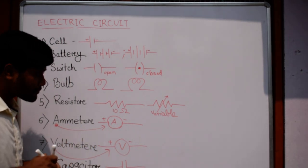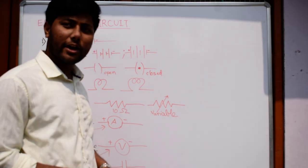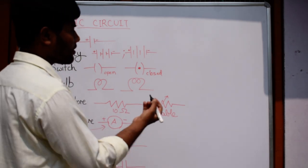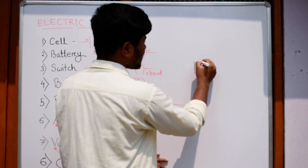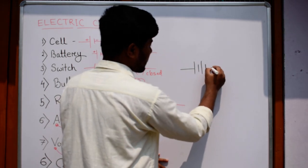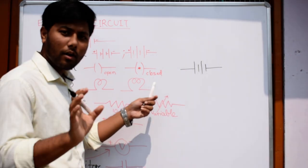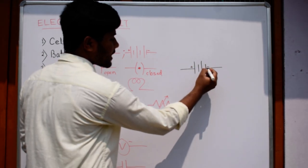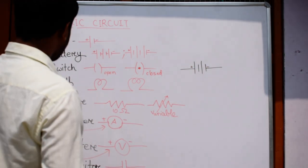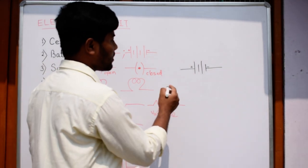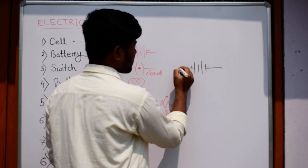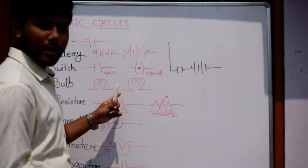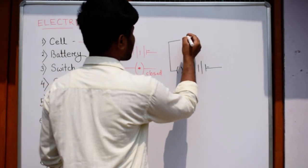Now how to draw a circuit diagram. First thing, there should be a cell or battery. Let us consider it as battery. This is the wire. The longer side is the positive, the other side is the negative. After that, there should be a switch. After that, let us give a bulb.